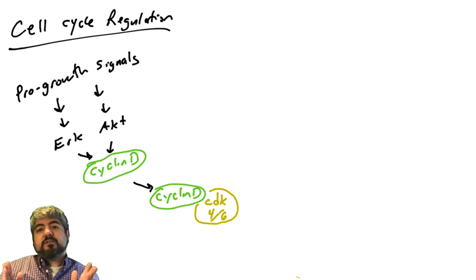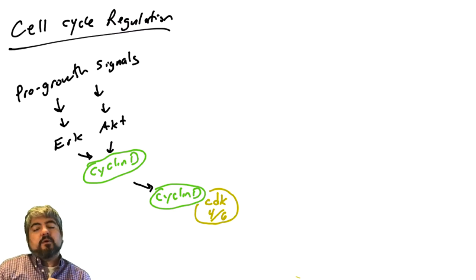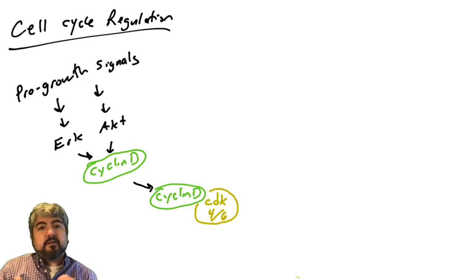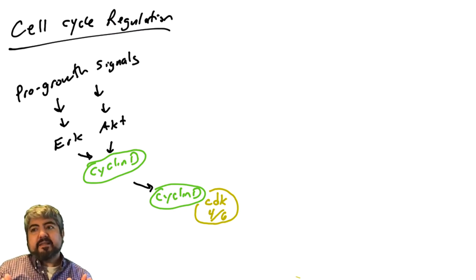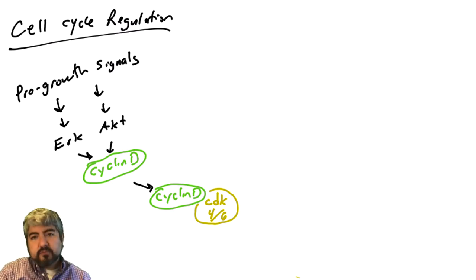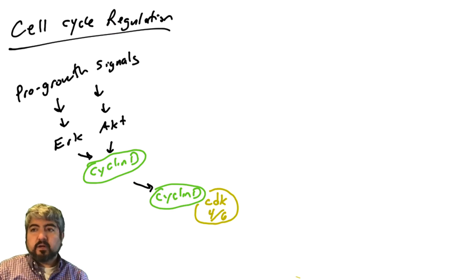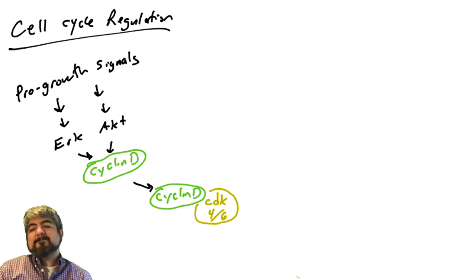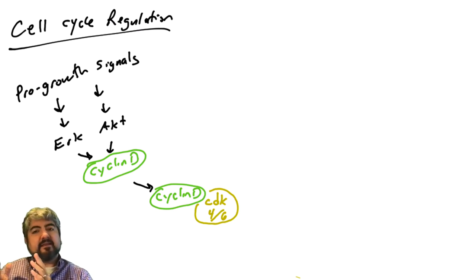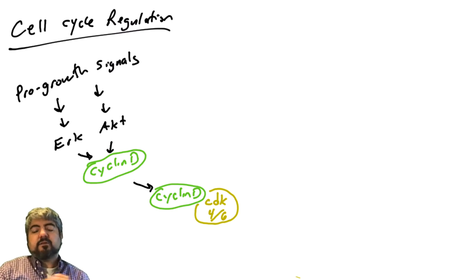In this video we're going to talk about regulators of the cell cycle. We previously introduced cyclin-dependent kinases — kinases that help push the cell through the cell cycle. These cyclin-dependent kinases work in conjunction with cyclins that activate them, and the CDKs phosphorylate substrates pushing the cell through the cell cycle.